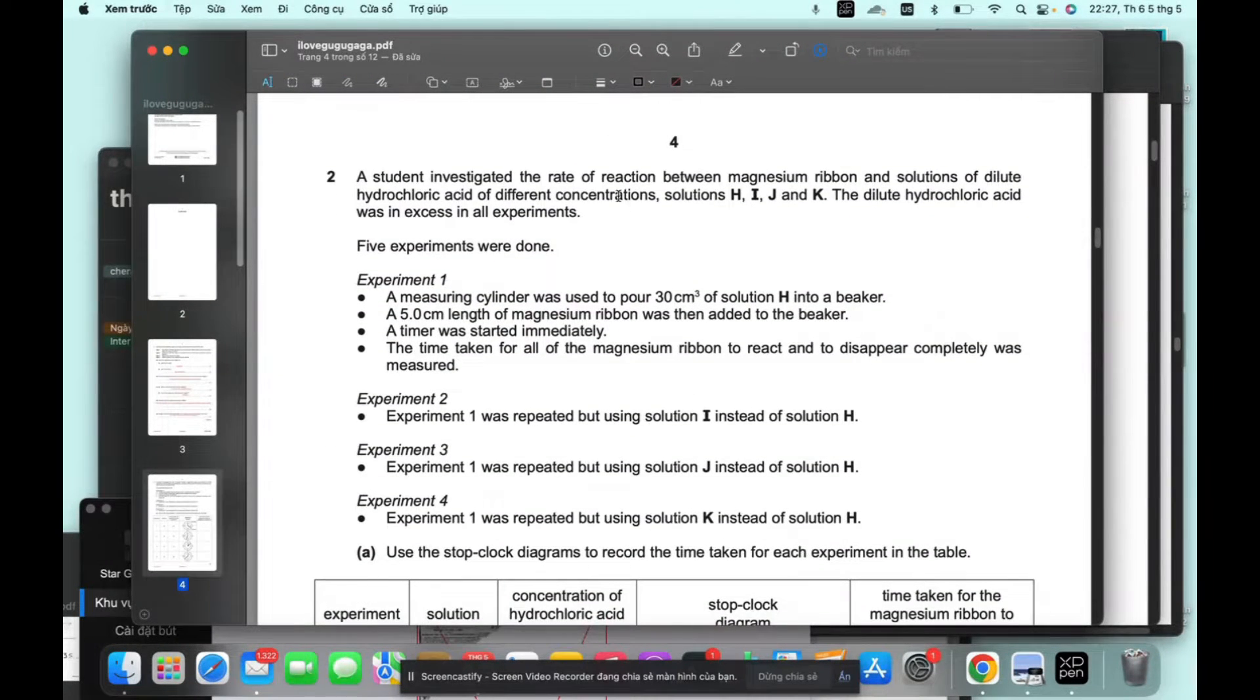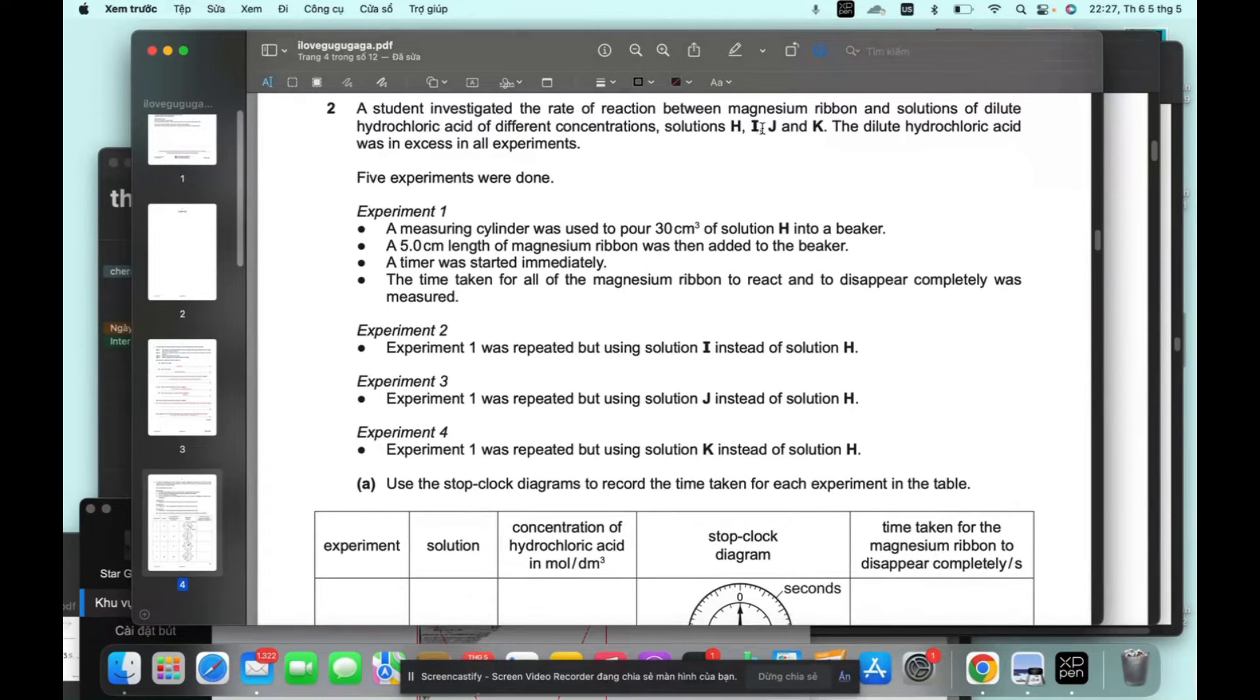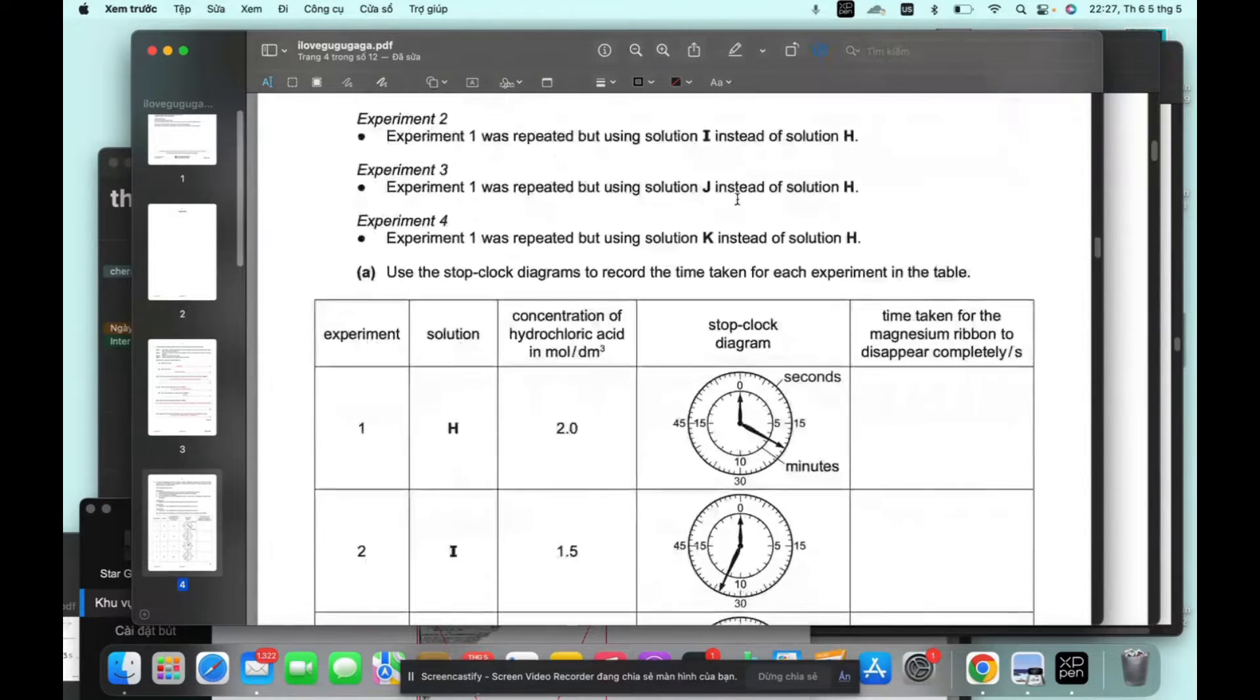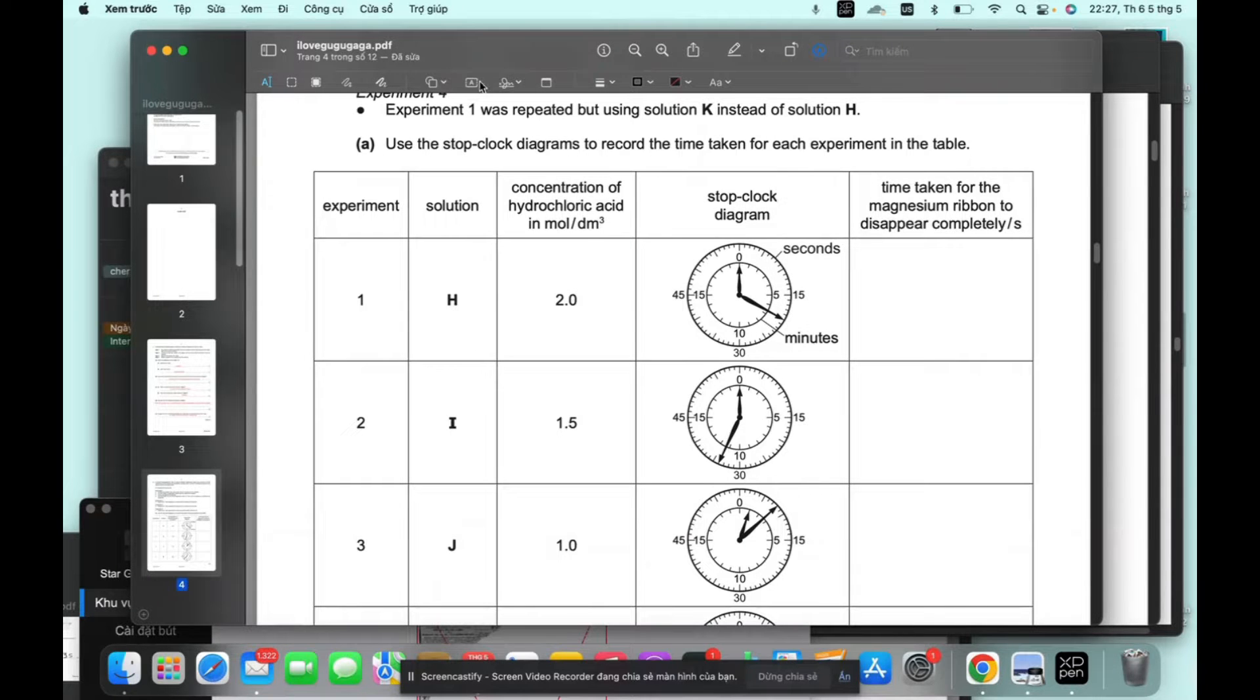The student investigate the reaction of magnesium ribbon and sodium hydrochlor concentration i, h, j and k. The time taken. So we read the time. So we just read the time in here. Let's see what the time is. This is second. This is minutes. So we have 15 seconds? 15, 16, 17, 18, 19, 20. 20 seconds.